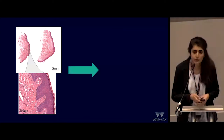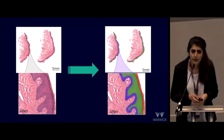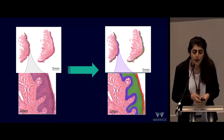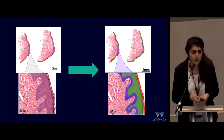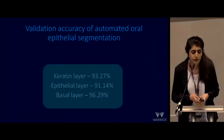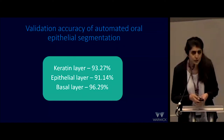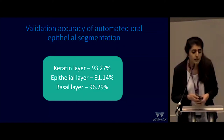Again, we have another sample also obtained from the cheek, and you can quite clearly see the different layers which have been overlaid on the original image. Our validation accuracy for the different layers was greater than 90% for keratin, epithelium, and basal layer, which is quite promising.